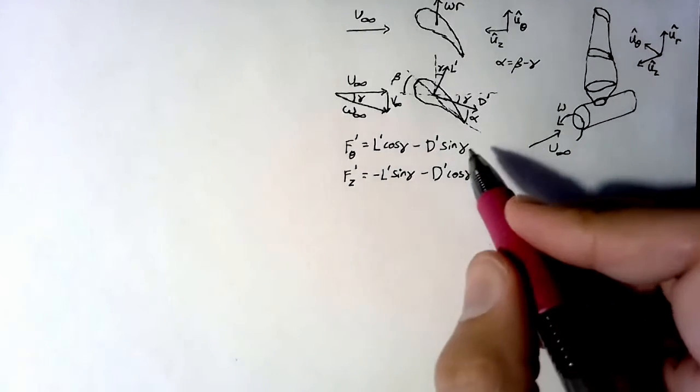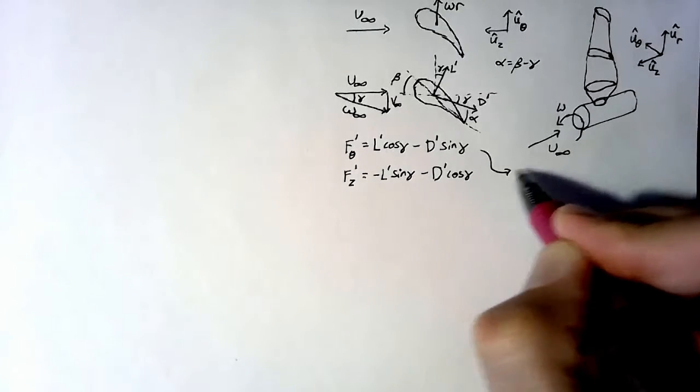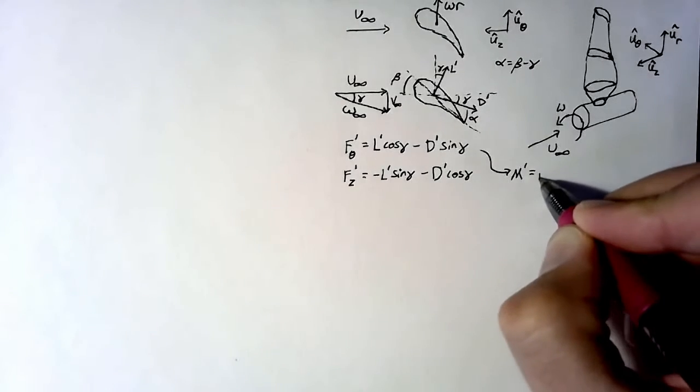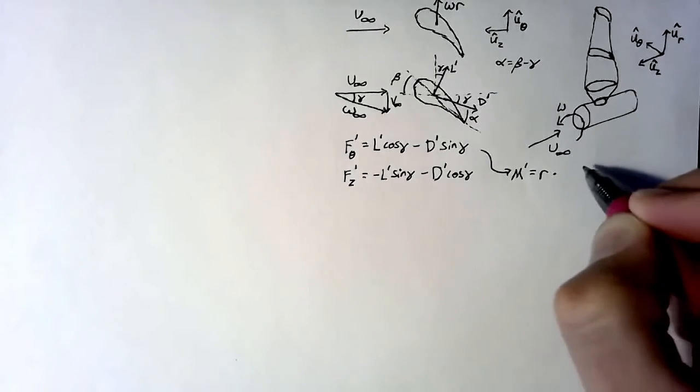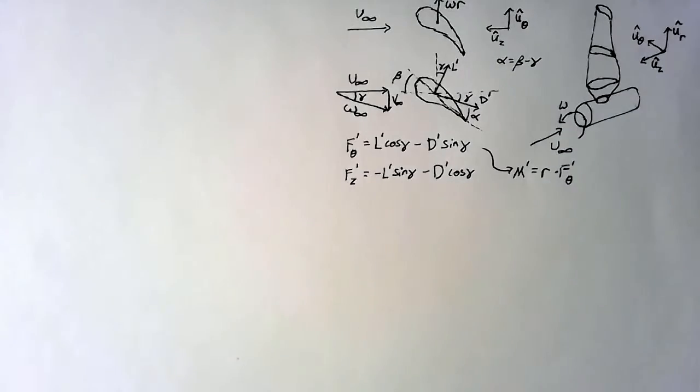And we get our moment from this f in the theta direction. We can just say that our moment, again per unit span, is going to be equal to r, our moment arm, multiplied by the force in the theta direction.